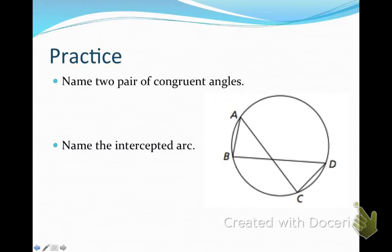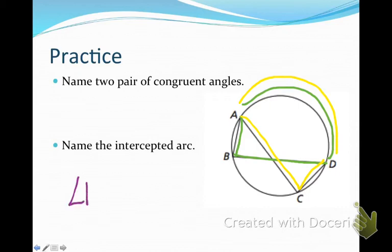Now let's do some practice. Name two pair of congruent angles. Well, congruent angles intercept the same arc. So ABD intersects arc AD. But then I also have angle ACD, which intercepts arc AD. So therefore, I'm going to say that angle B is congruent to angle C.